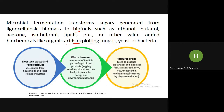Livestock waste and food residues discharged from households and food-related industries — these are all organic matter from house or food industry. The biobased biomass is composed of inedible parts of agricultural products such as logging residues, rice straw, and rice husk. We only eat the rice, not the paddy husk or straw — those go to waste.